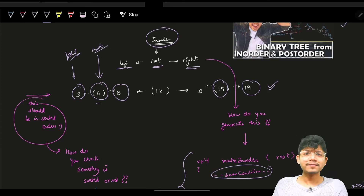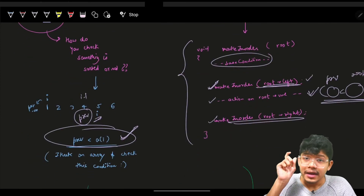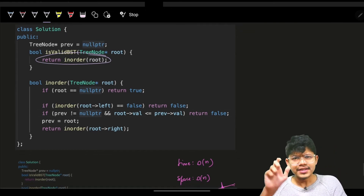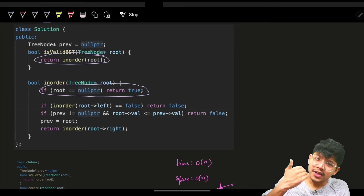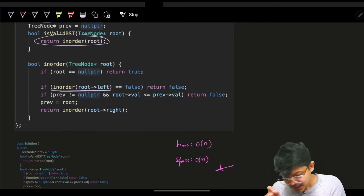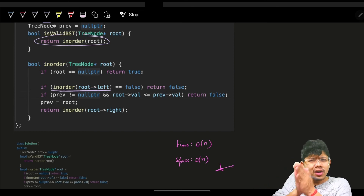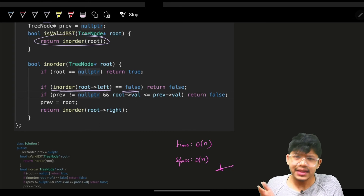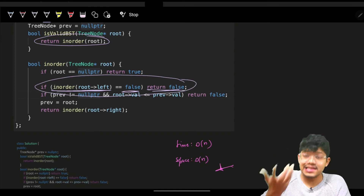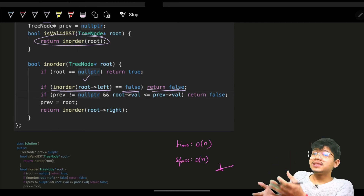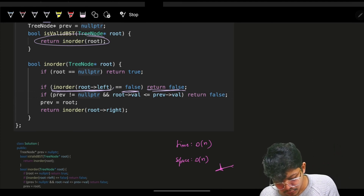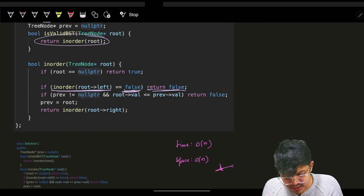Let's see the code. We call inorder traversal on the root node. Base case: if root is null, return true. Then do in-order traversal of left — if it returns false, return false immediately. This can be written as a one-liner: call inorder for left and if it returns false, return false.